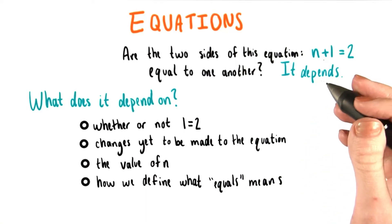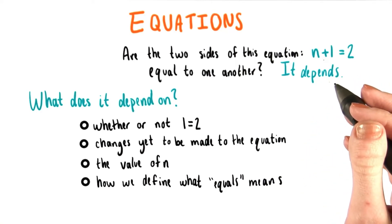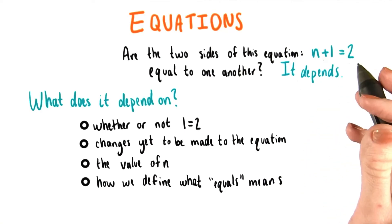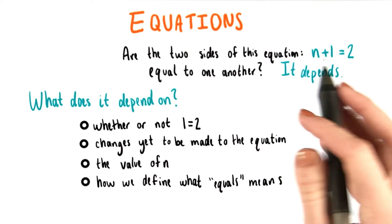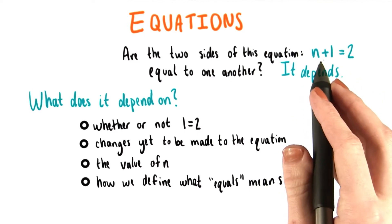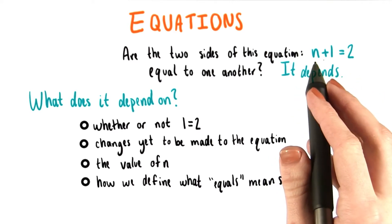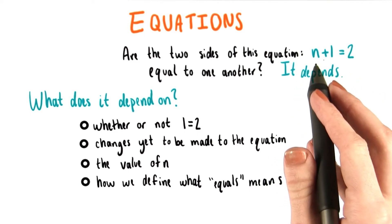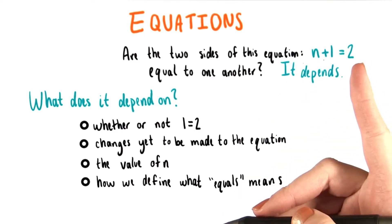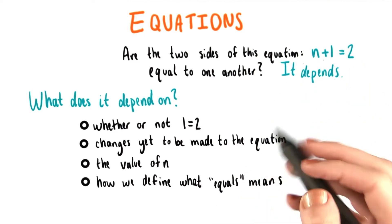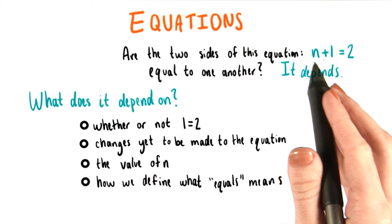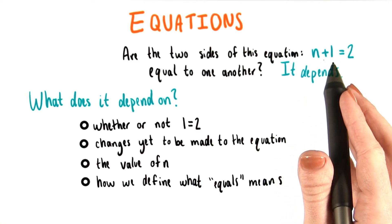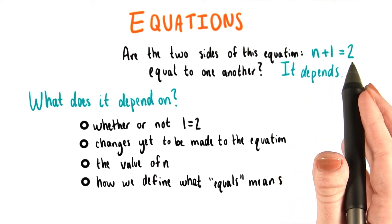Remember that variables are so great and useful because they can take on different values. We could substitute in a whole bunch of things for n right here, but only one of those numbers would make this entire side of the equation, n plus 1, equal to 2.